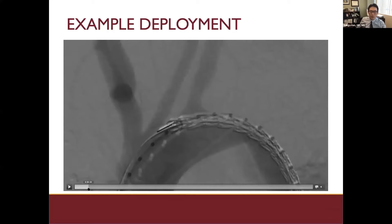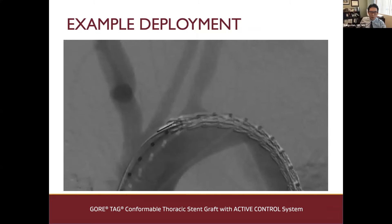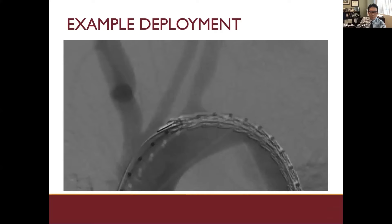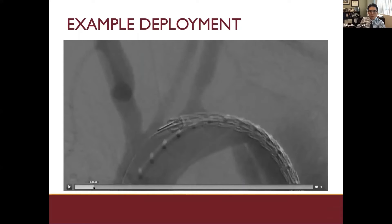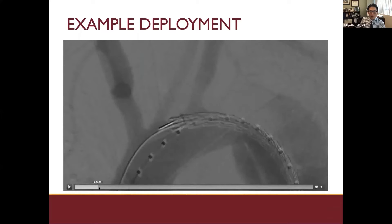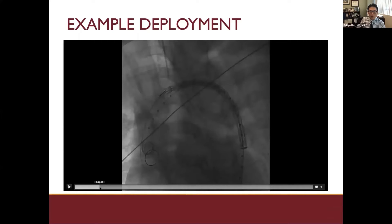With the initial position of the CTAG active control, we do an arch aortogram. Here you can see that the device is sitting just distal to the left carotid artery. We then do a partial deployment of the first sleeve from front to back.